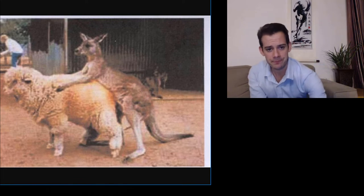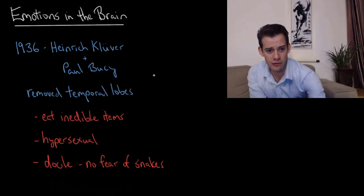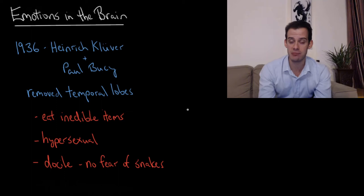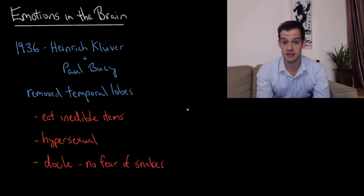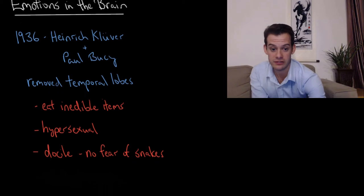You might think that because Kluver and Busey surgically removed the temporal lobes, the temporal lobes must be involved in these symptoms. So it must be the case that the temporal lobes are involved in regulating eating behavior or sexual behavior or fear. But that's actually not the case. It turns out the removal of the temporal lobes also damaged other areas of the brain, and these are the areas that are more directly related to the symptoms. These are areas that make up what's called the limbic system.